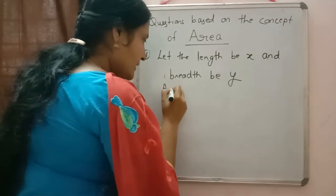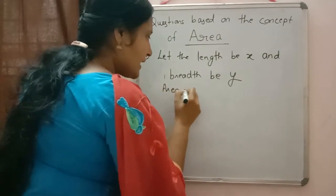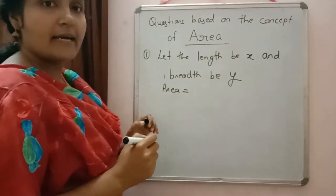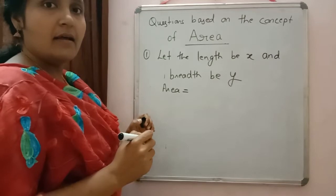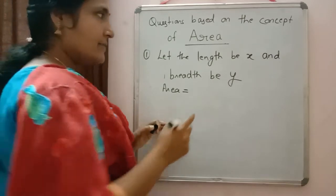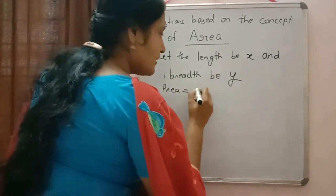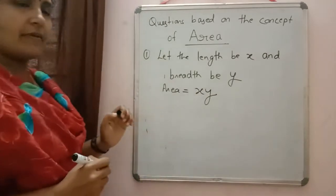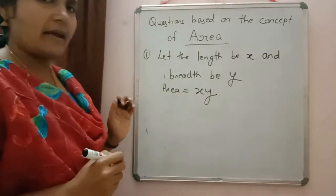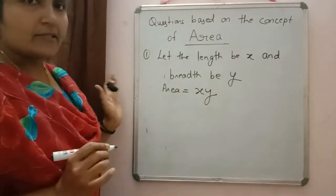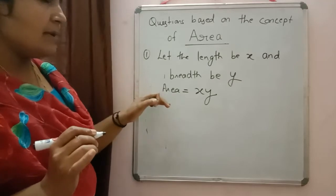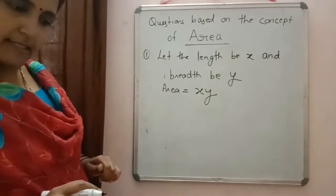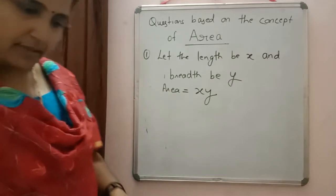So what will be the area of the rectangle? The formula for area of a rectangle is length into breadth, which equals x into y. We can write this directly as xy. So our area will be equal to xy. Now we can check what condition is given in the question.